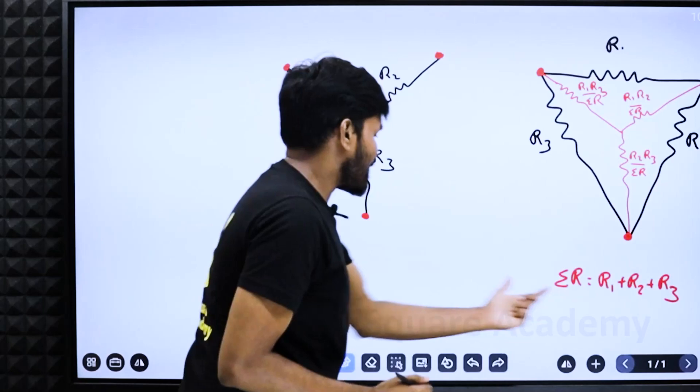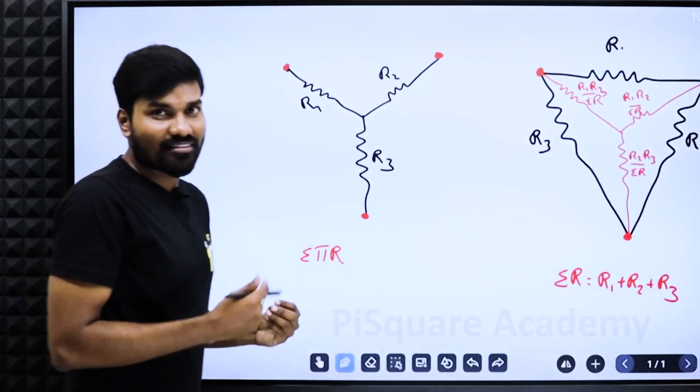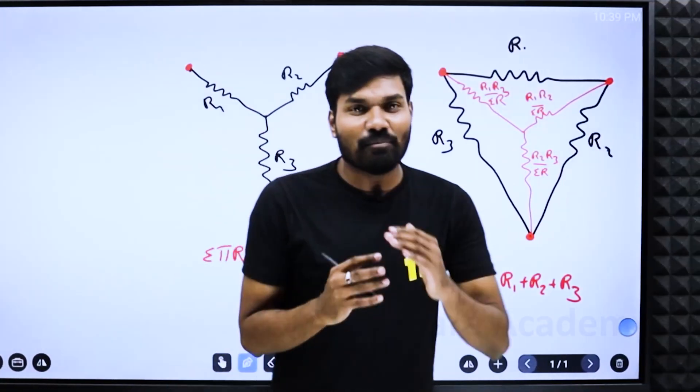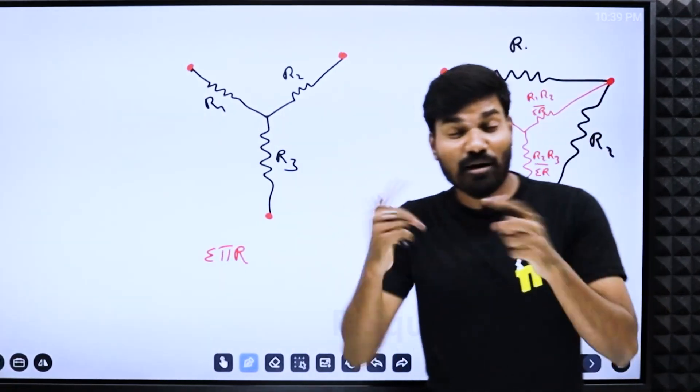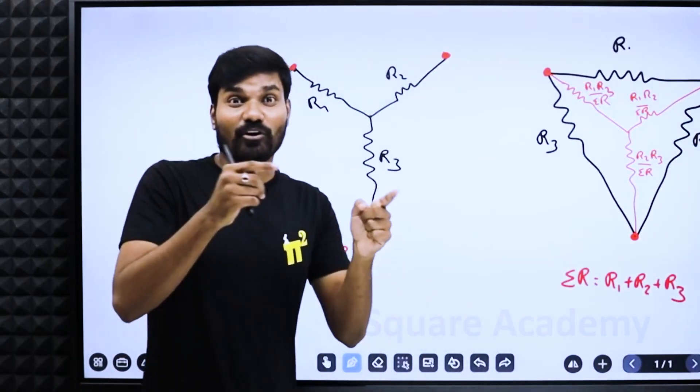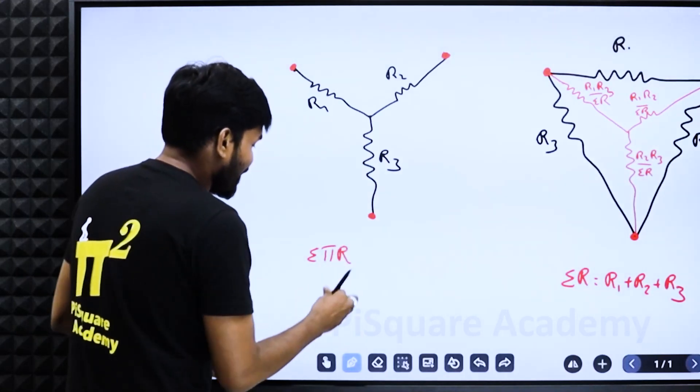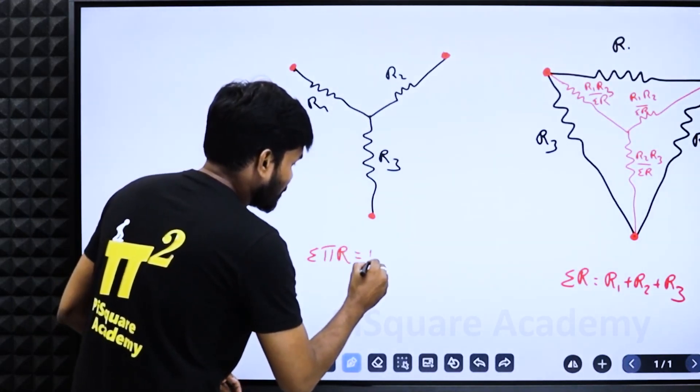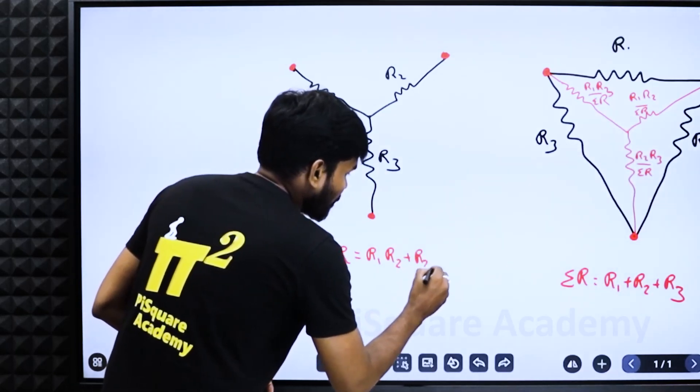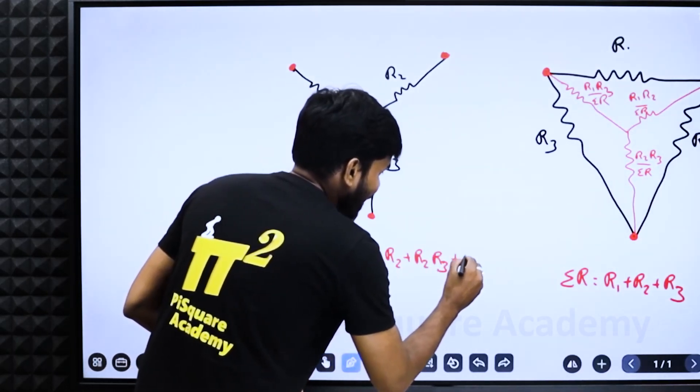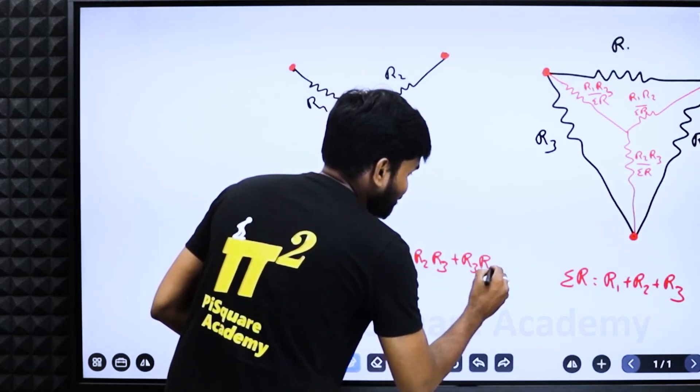Sigma R here, sigma Pi R here. What is sigma Pi R? Sigma means sum, Pi means product. Sigma Pi, both are there, sum of products. Simply means sigma Pi R equals R1 R2 plus R2 R3 plus R3 R1.